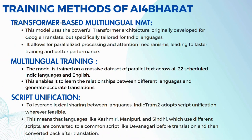Next, we'll talk about the training methods of AI4Bharat. The model uses Transformer-based multilingual NMT — the powerful transformer architecture originally developed for Google Translate, but specifically tailored for Indic languages, allowing parallelized processing and attention mechanisms for faster training and better performance. The model was trained on a vast dataset of parallel text from all 22 scheduled Indian languages as well as English, allowing it to learn relationships between languages. Additionally, script unification is used: Indic NMT integrates scripts whenever possible, converting languages with unique scripts such as Kashmiri, Manipuri, and Sindhi into a common script like Devanagari prior to translation, then converting them back after translation.